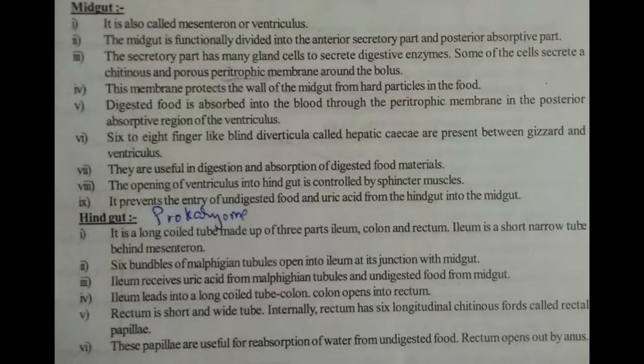The midgut is also called the mesentron or ventriculus. It is functionally divided into an anterior secretory part and a posterior absorptive part. The secretory part has many gland cells that secrete digestive enzymes. Some of the cells secrete a chitinous and porous peritrophic membrane around the bolus. This membrane protects the wall of the midgut from hard particles in the food, and the digested food is absorbed into the blood through the peritrophic membrane.